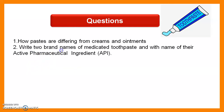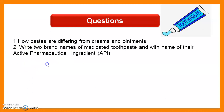Question 2: Write two brand names of medicated toothpaste with their active pharmaceutical ingredients. Colgate contains calcium carbonate as its active ingredient and is available in various forms: Colgate gel, Colgate toothpaste, and Colgate ayurvedic paste. Pepsodent is another brand. Sensodyne toothpaste is used for sensitive teeth and gums.